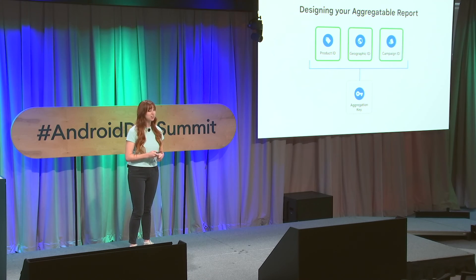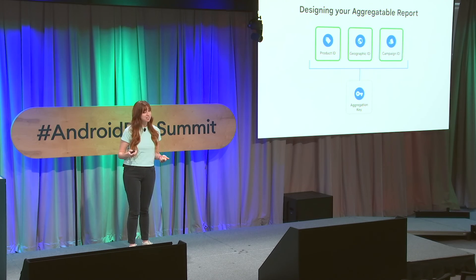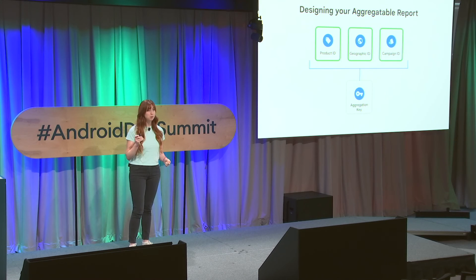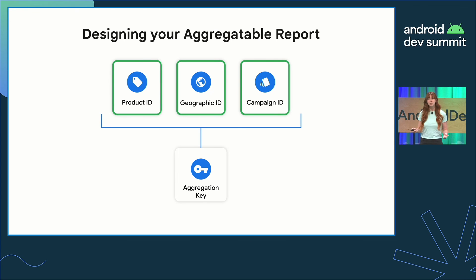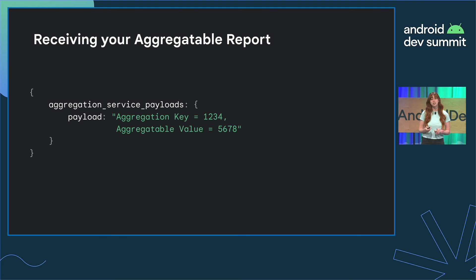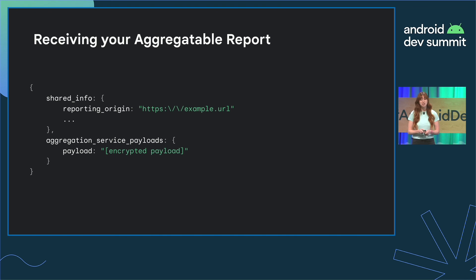The aggregate report details how well your advertisement is doing overall. There are many ways to measure the success of an ad based on different business needs, so the aggregate report is customizable depending on what you want to measure. For example, if you want to measure how many purchases of a product were made in a certain geographic region due to an ad campaign, you can design an aggregation key to measure the amount of purchases based on those categories. The payload will return an aggregate key referring to the ad campaign, geographic region, and product, and the aggregatable value, which refers to the amount of purchases made in those categories. In practice, the payload information will be encrypted in the report and bundled with other information such as the reporting origin, which lists the URL where the report was sent.